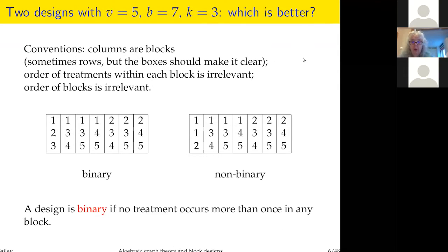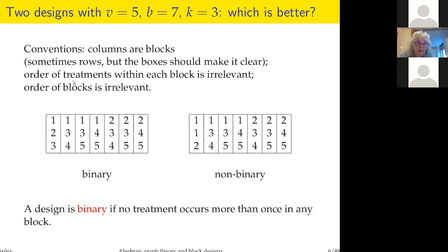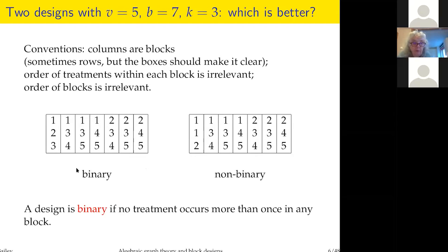I'll show you some block designs to define some words. My convention is that blocks are shown as columns. The order of treatments within each block is not relevant. A design is binary if no treatment occurs more than once in a block, whereas a non-binary design allows a treatment to appear twice in the same block — something combinatorialists often don't even consider.